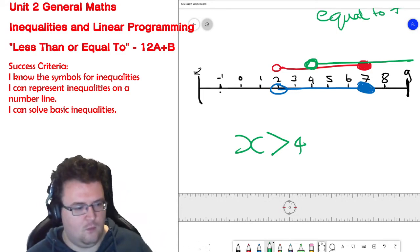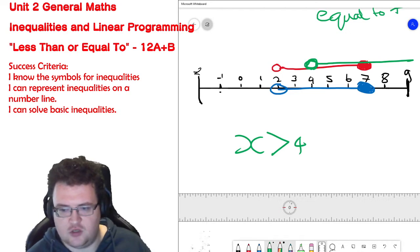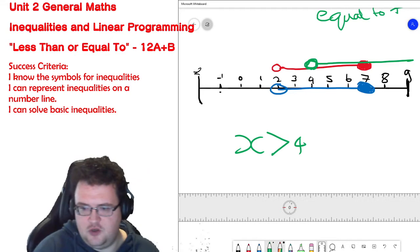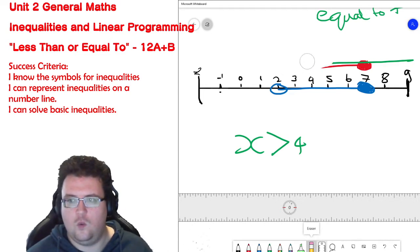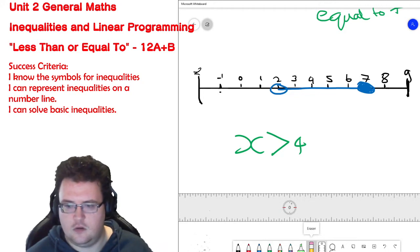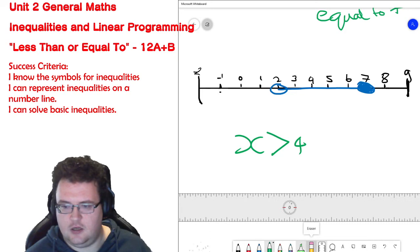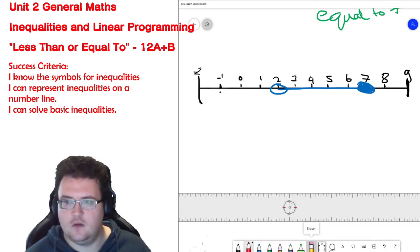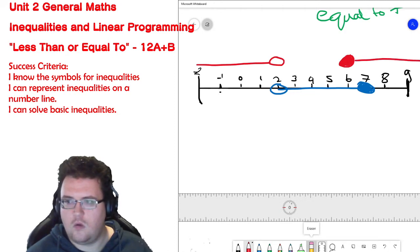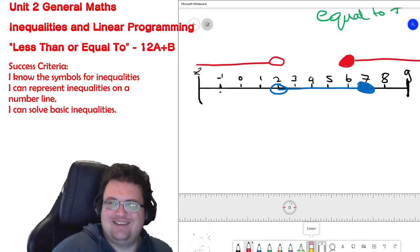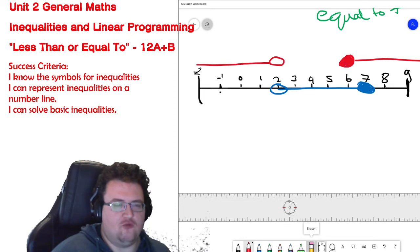So sometimes you can end up with some weird inequalities. So for example, I'll do one more here. Well actually what I'll do is I'll do the opposite. I will draw the number line and you guys will tell me what it is. If you were to write it using symbols.